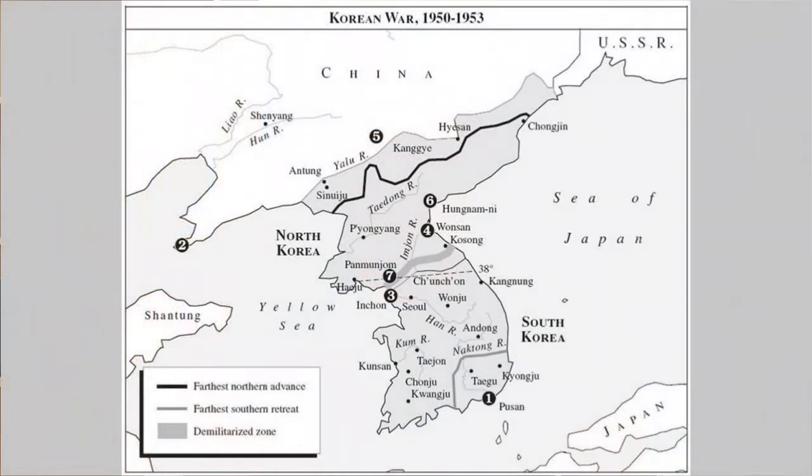Let us pivot from Europe to Asia to talk about what Westad describes as the biggest calamity of the Cold War — the Korean War. Between 1950 and 1953, the people of the Korean Peninsula fought a civil war that split the country into North and South — that is why we have North Korea and South Korea today. Westad explains that Korea used to be a tributary state of the Chinese Empire. Between 1894 and 1895, China fought a war with Japan and lost, and Japan then annexed Korea.